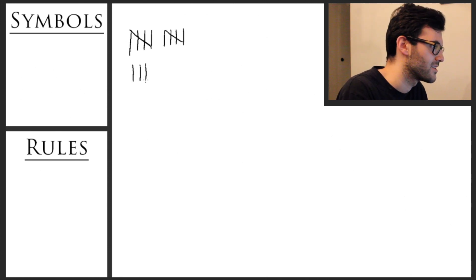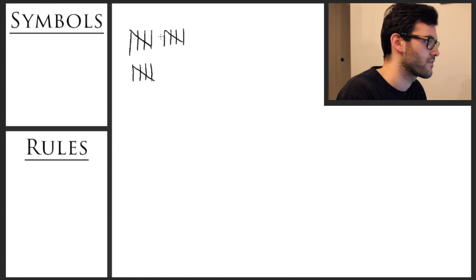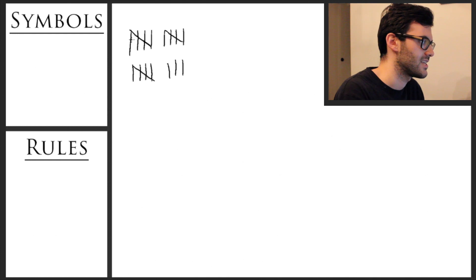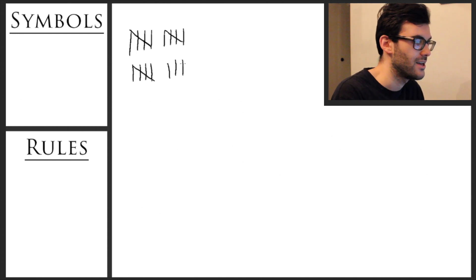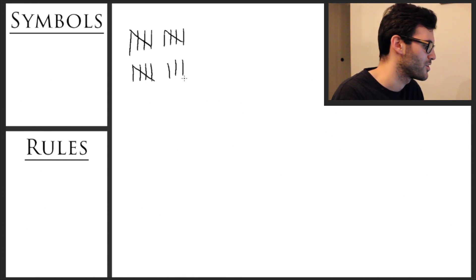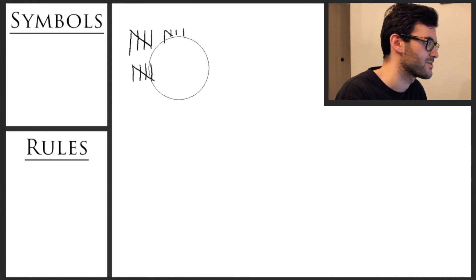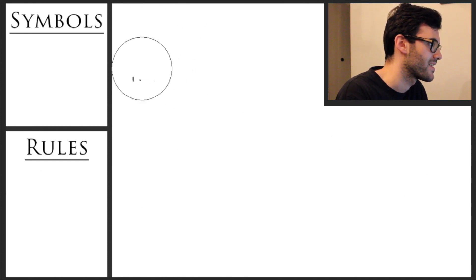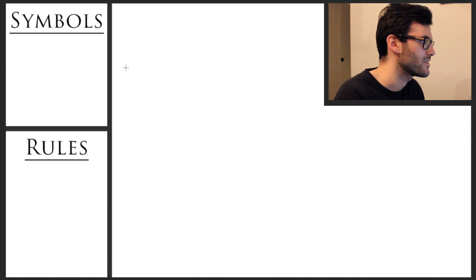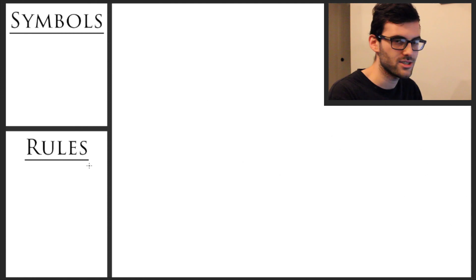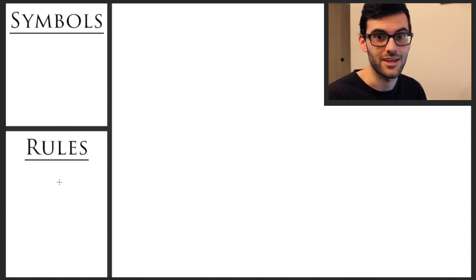This is a tally system, and we can easily see that we have 15 right here — three groups of five. And so if we had this number right here, we'd see three groups of five and then three, so this is 18. This is a very basic tally system, but Roman numerals are essentially just a slightly more complex tally system. In explaining Roman numerals, I'll be talking basically about the symbols used, as well as two specific rules you have to keep in mind to write this correctly.